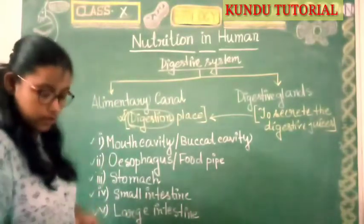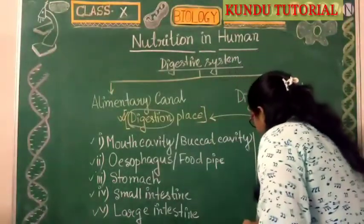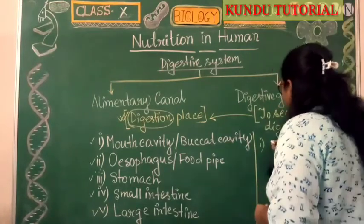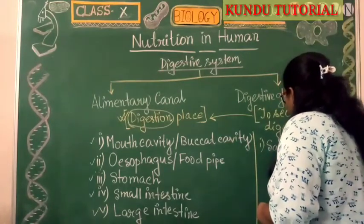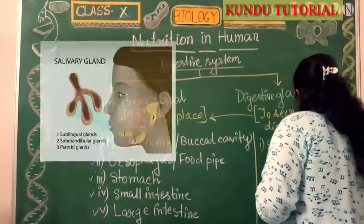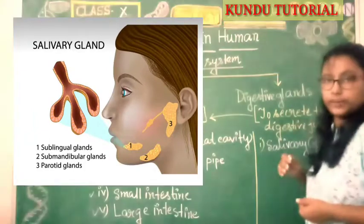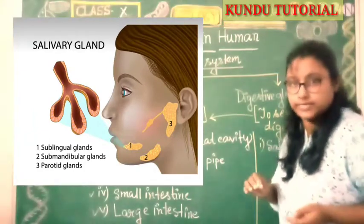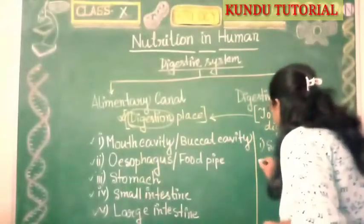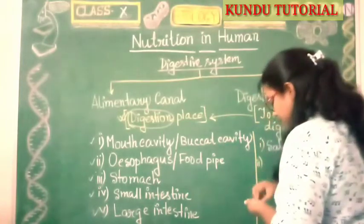Now let's introduce the digestive glands. The first digestive gland is the salivary gland, because the salivary gland is present in the mouth cavity.